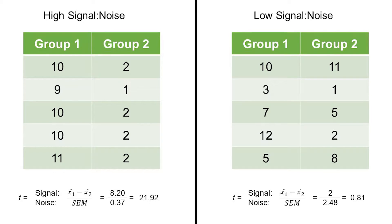We can use a t-test as an example. The t-test is a signal-to-noise ratio. The signal is the difference between the means of the two groups — x̄₁ minus x̄₂ — and we divide that by something called the standard error of the mean, which represents the noise. For the left-side data, the difference between means is 8.2 divided by a standard error of 0.37, giving us a t-value of 21.92.